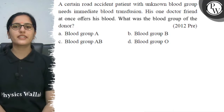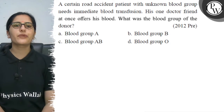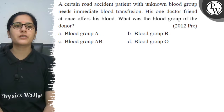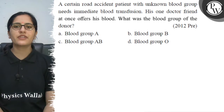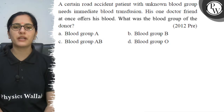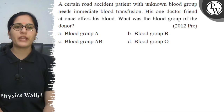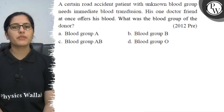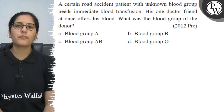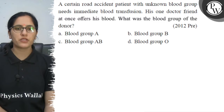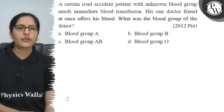Hello, let's see the question. A certain road accident patient with unknown blood group needs immediate blood transfusion. His doctor friend at once offered his blood. What was the blood group of the donor? Option A: blood group A. Option B: blood group B. Option C: blood group AB. Option D: blood group O.